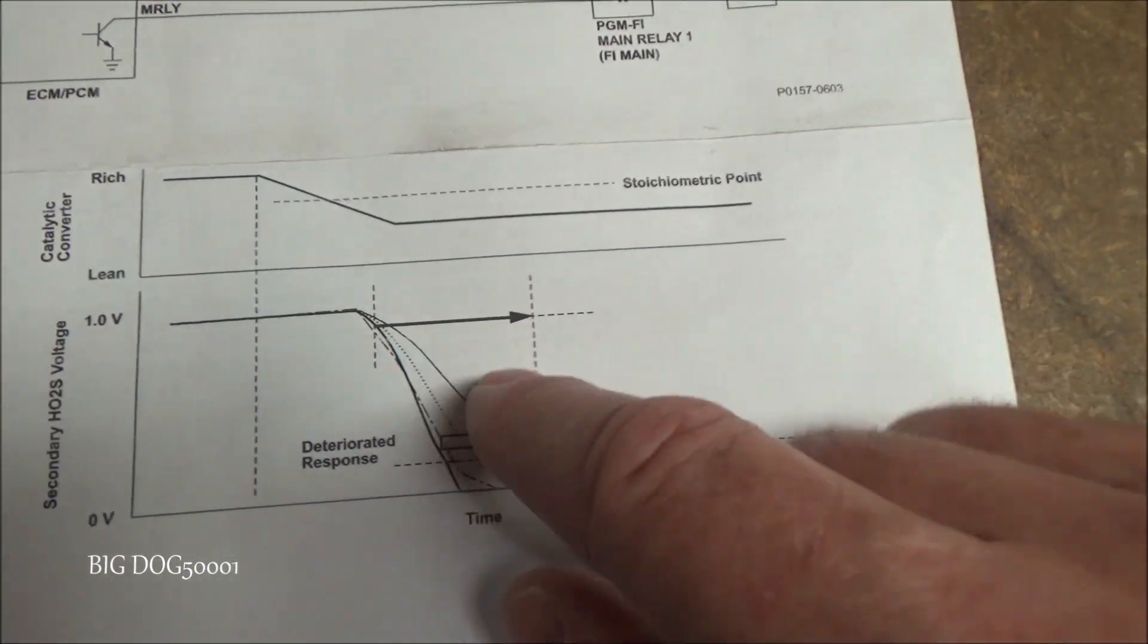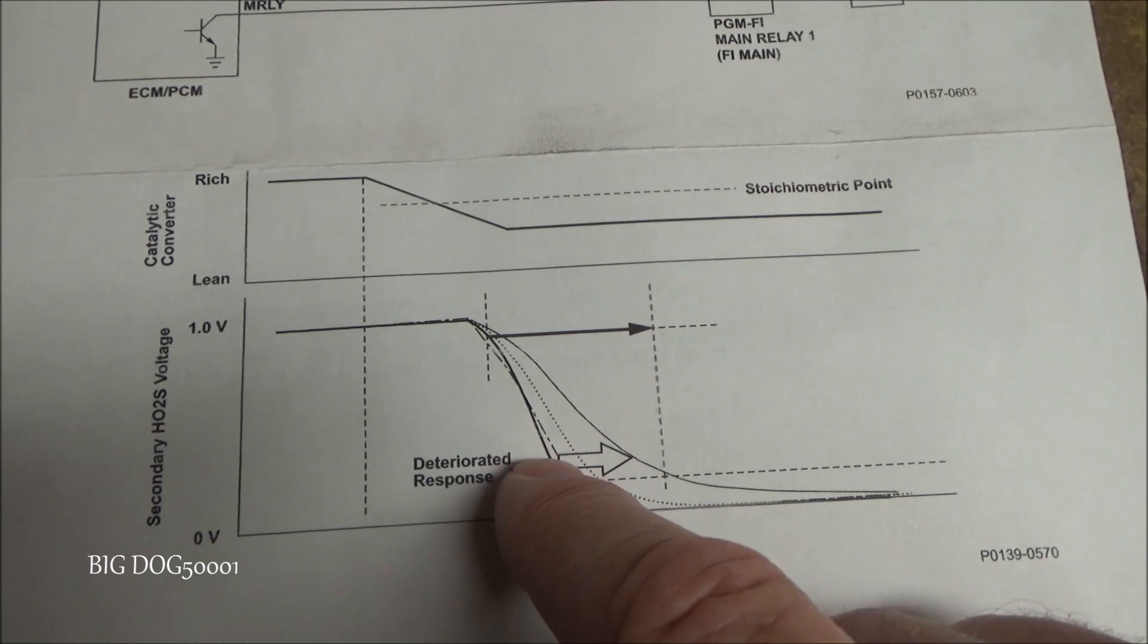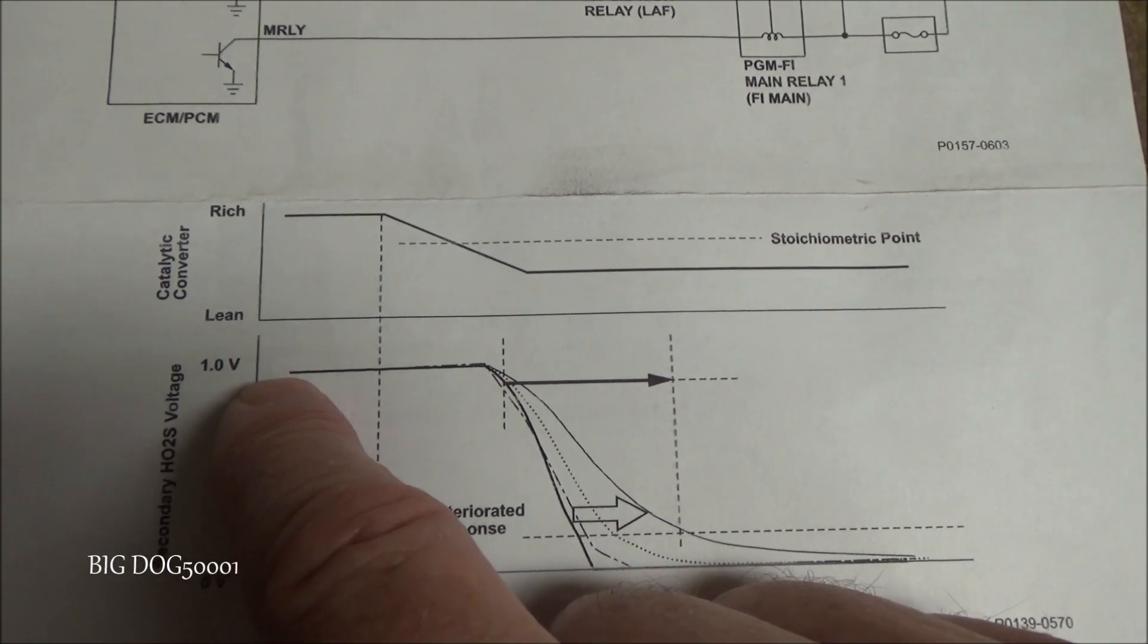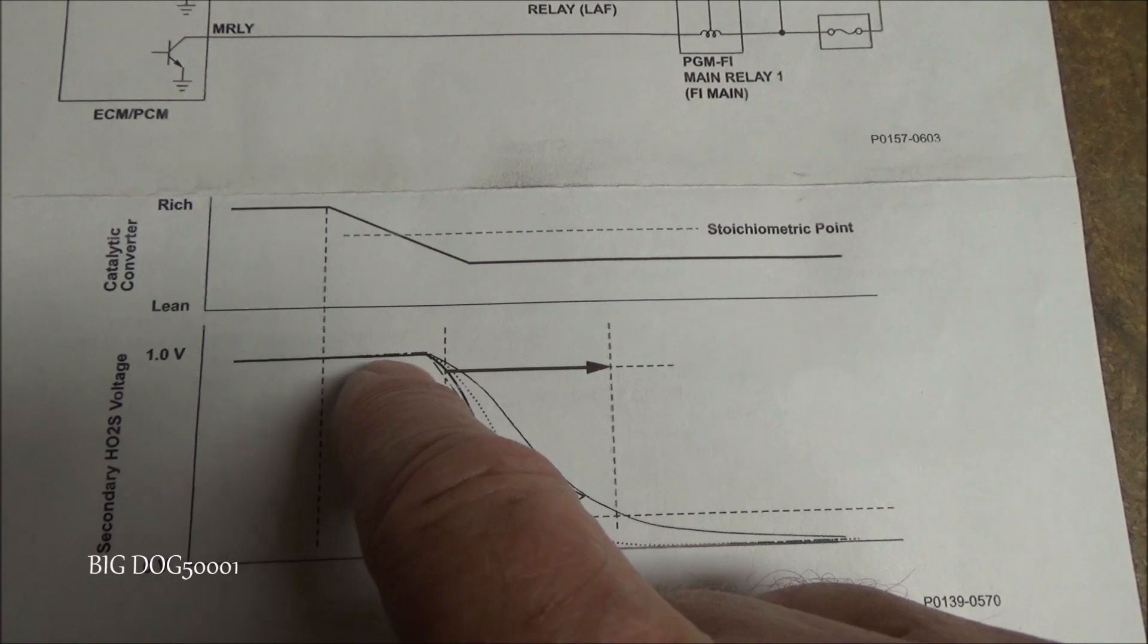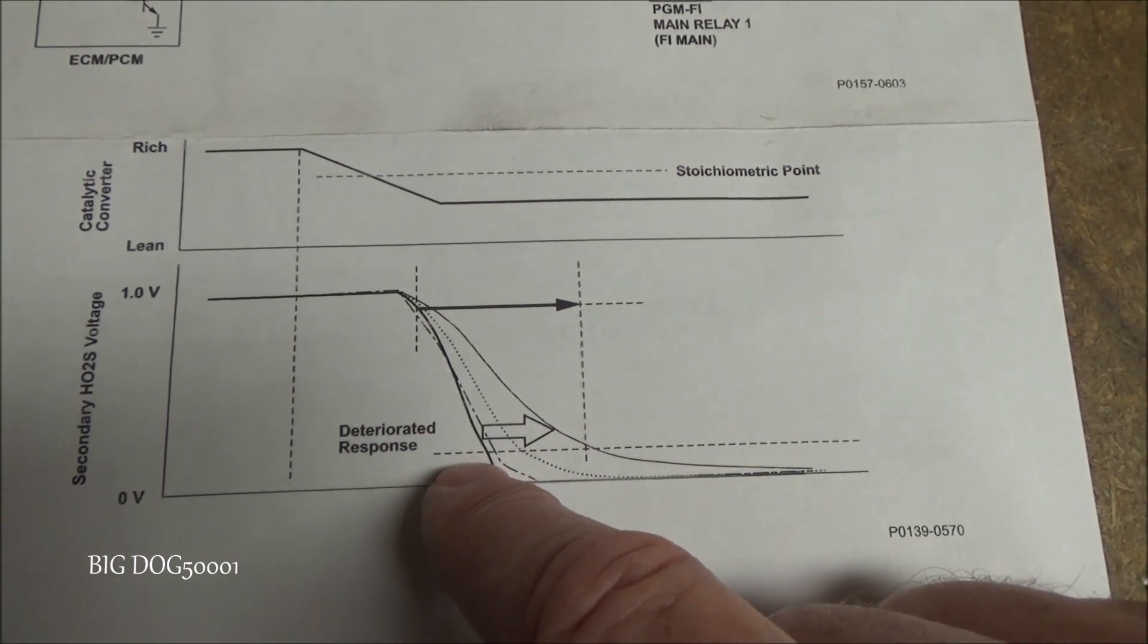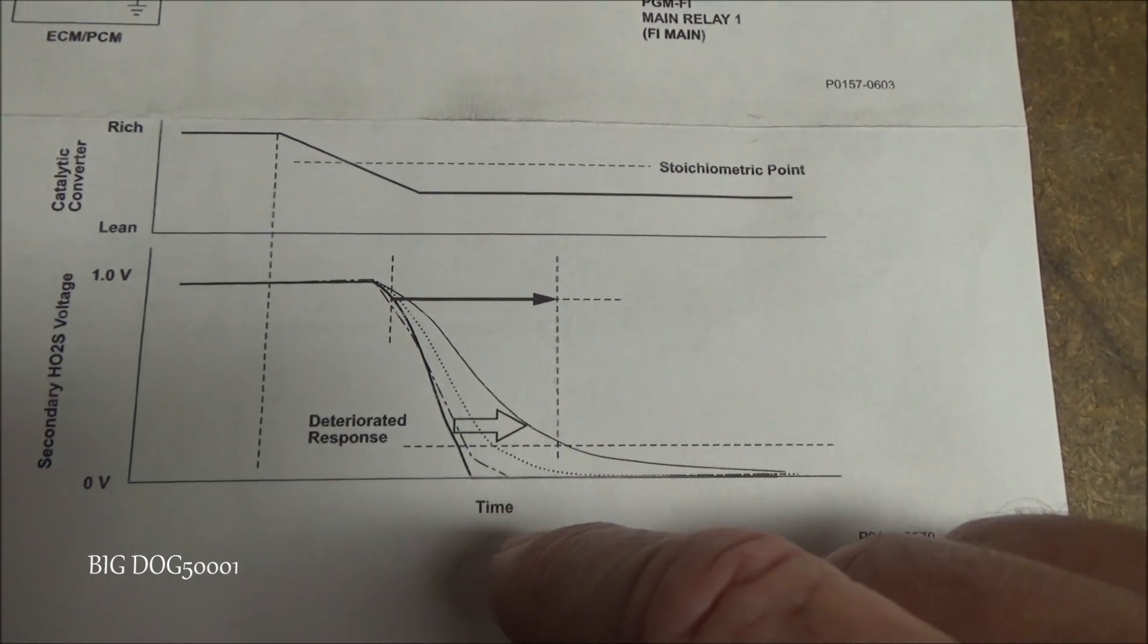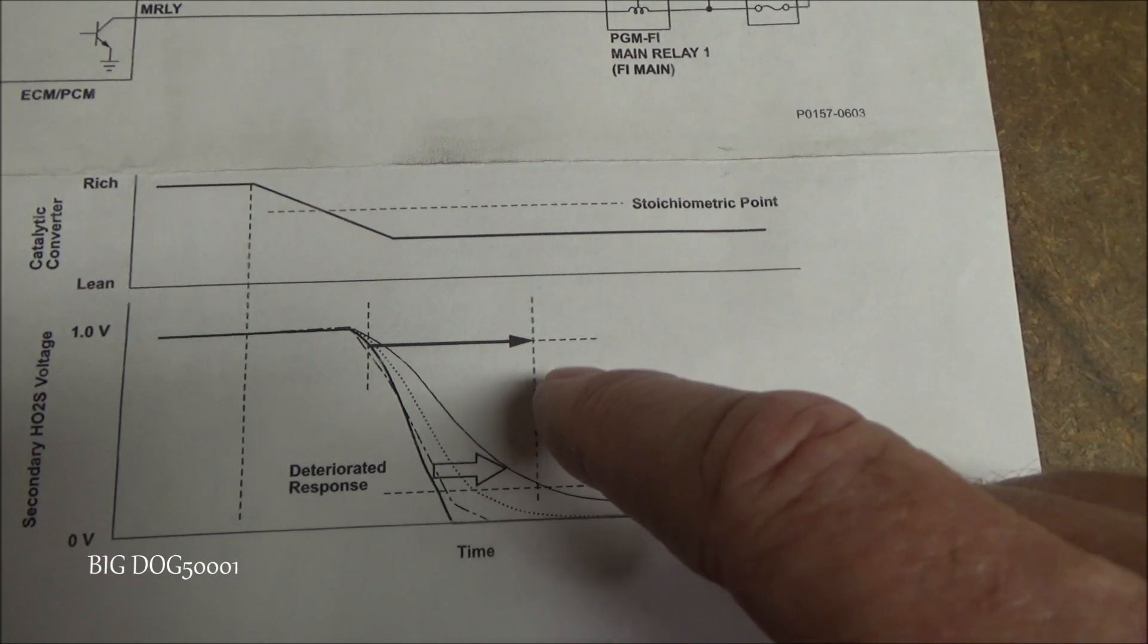So down here if we look right here at this little graph we can see here's a representation of what it looks like if you're looking at a scan tool or on a scope. You got our voltage coming in and then when the oxygen sensor starts to work it drops down into the operating voltage or the area where it operates which is typically at 200 millivolts to 800 millivolts.